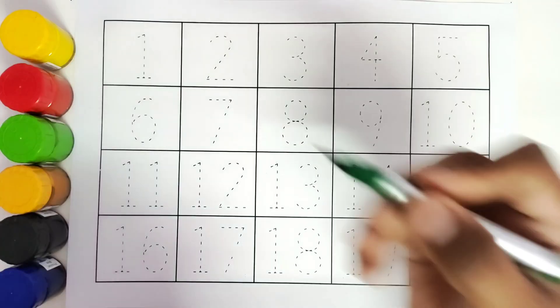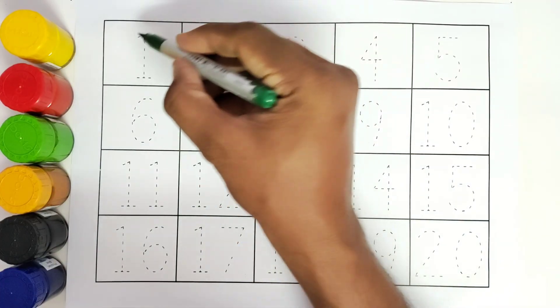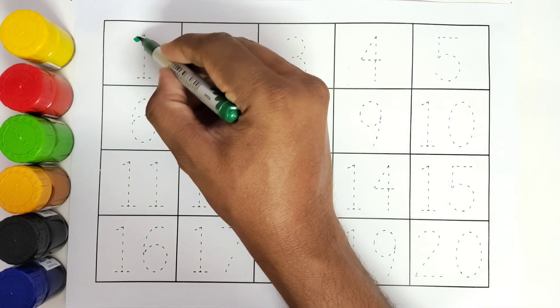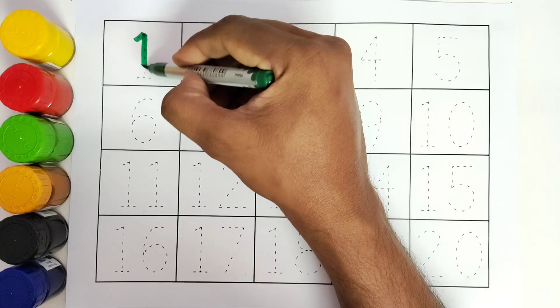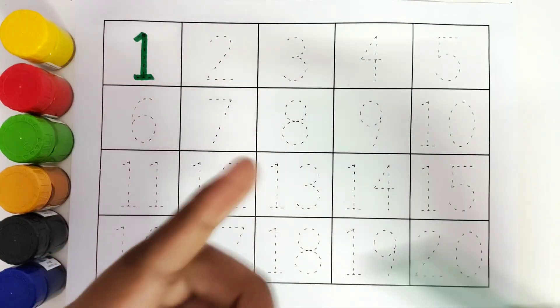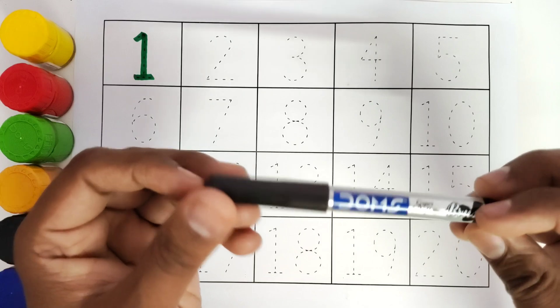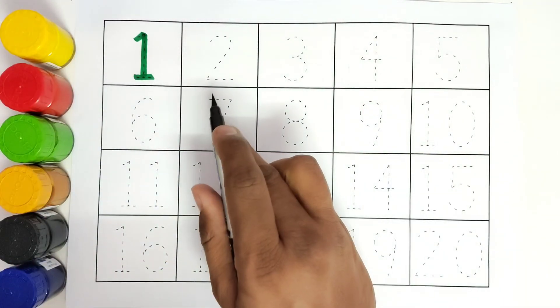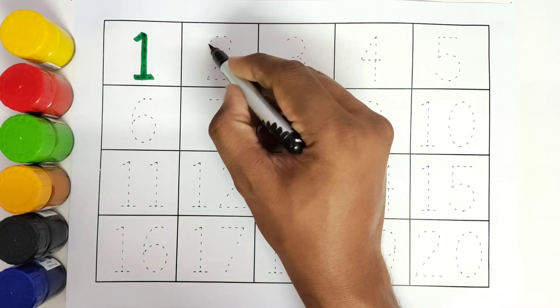Green color. Number 1. We will trace the number 1. This is black color. We will trace the number 2.